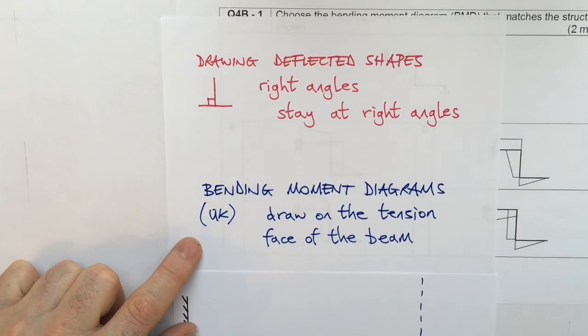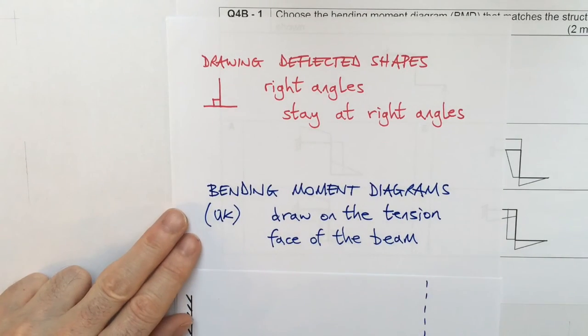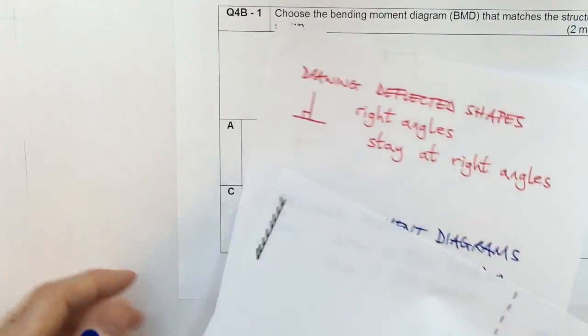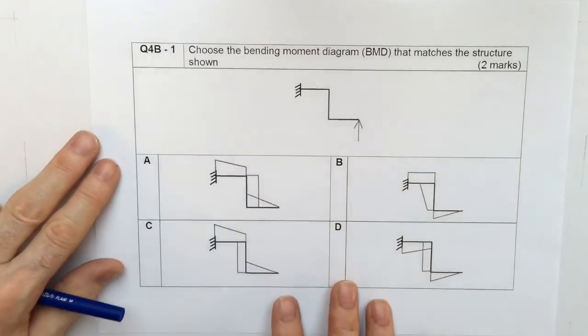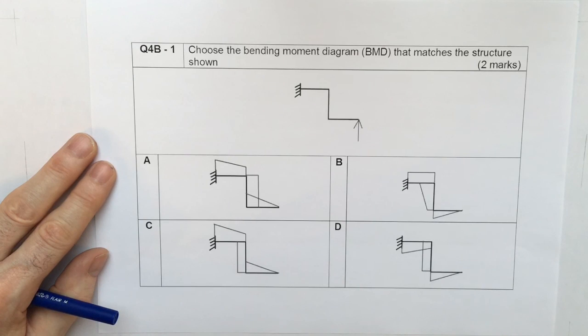It's worth bearing in mind a couple of points that I made during this. And one is that when you draw deflected shapes, right angles stay at right angles. And then finally, when you draw bending moment diagrams, you draw them on the tension face of the beam. At least you do in the UK. Now other countries have different conventions and it is just a convention. So that's how I solve question one of my university's exam asking for a bending moment diagram for this structure. I hope you found that interesting. Thanks for watching.